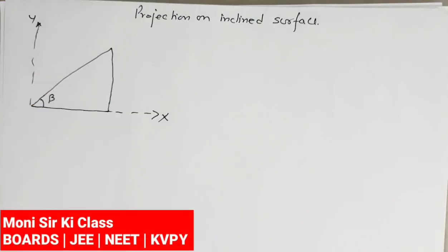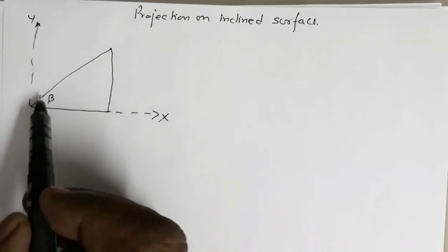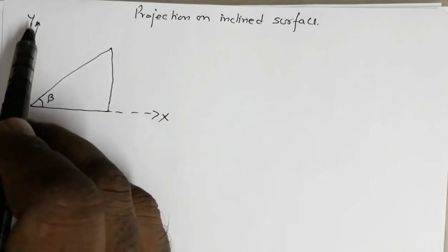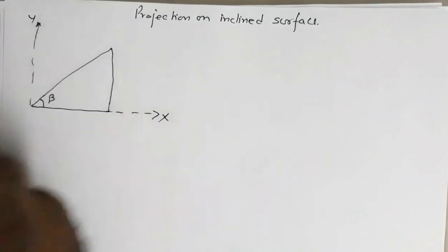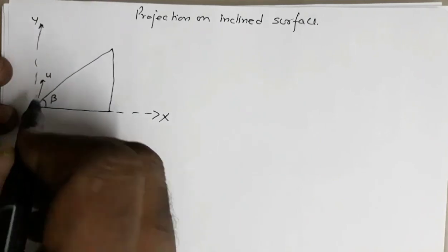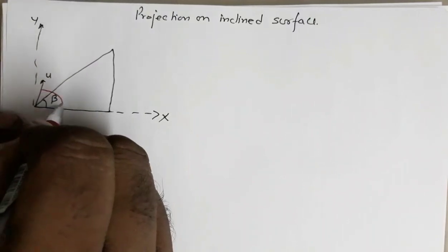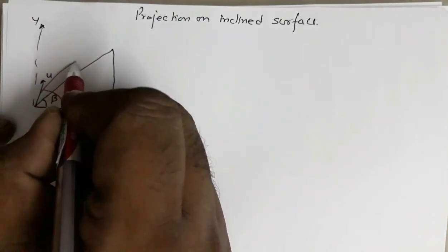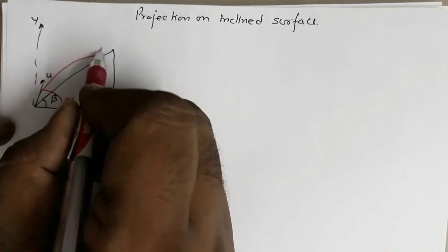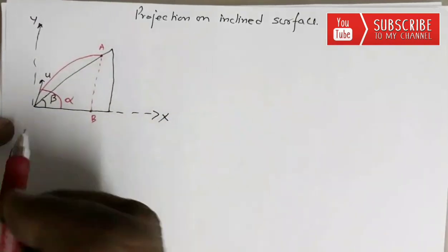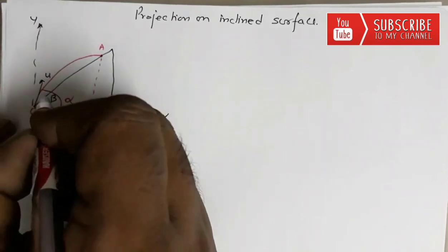Hello everyone, welcome to my channel. In this video we are going to calculate the range when a projectile is projected on an inclined surface. Suppose this is an inclined surface of inclination beta with the horizontal — the horizontal direction is along the x-axis and the vertical is along the y-axis. The projectile is projected from the foot of the incline with velocity u, making an angle alpha with the horizontal. It traces a parabolic path and strikes at point A.